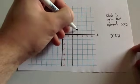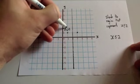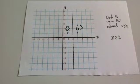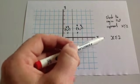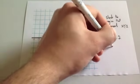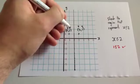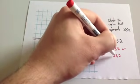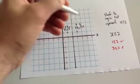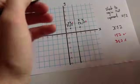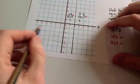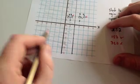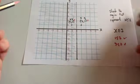We'll choose a couple of coordinates to test. The first is (1, 1): the x-coordinate is 1, and 1 is less than or equal to 2, so this one works. The second is (3, 1): the x-coordinate is 3, and 3 is less than or equal to 2 — that doesn't work. So the region to the left of the line is the region that satisfies the inequality. We shade that region in carefully — this is the region that represents x is less than or equal to 2.